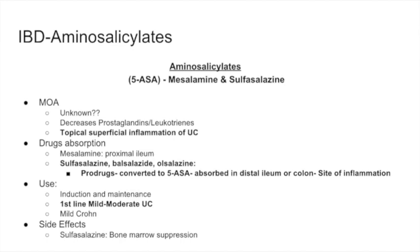The important thing about aminosalicylates is understanding where they work. In ulcerative colitis and Crohn's, specific areas are inflamed — in UC the rectum is most involved, in Crohn's there are patchy affected parts. We design these drugs to be absorbed at affected areas. Mesalamine is designed to be absorbed in the proximal ileum. Sulfasalazine and other drugs are pro-drugs converted into 5-aminosalicylate, absorbed in the distal ileum or colon. We can also give rectal mesalamine or rectal sulfasalazine for proctitis, delivering the drug directly as a suppository.